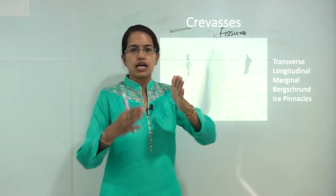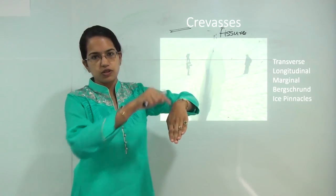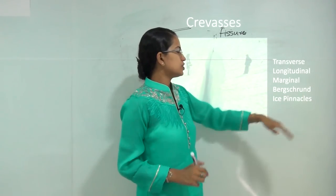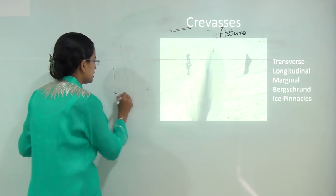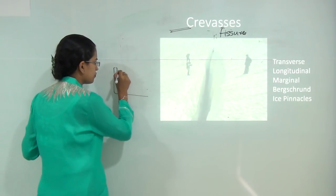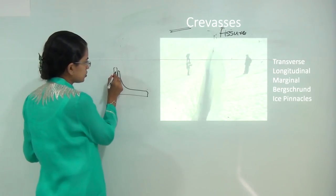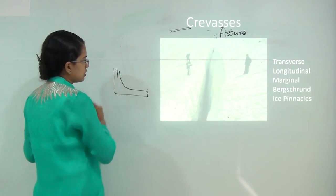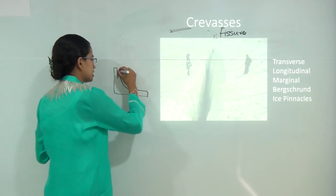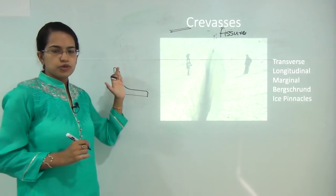Longitudinal crevasses occur parallel to the flow — if the flow is in one direction, the crevasse also occurs in that direction. The bergschrund is usually seen with cirque formation and it clips off from the main rock, creating a gap or crevasse at the topmost margin.